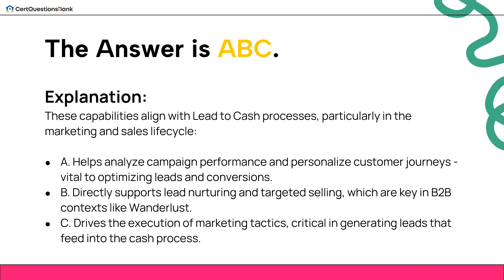The answers are A, B, C. These capabilities align with lead-to-cash processes, particularly in the marketing and sales lifecycle. A: Helps analyze campaign performance and personalize customer journeys — vital to optimizing leads and conversions. B: Directly supports lead-nurturing and targeted selling, which are key in B2B contexts like Wanderlust. C: Drives the execution of marketing tactics, critical in generating leads that feed into the cash process.